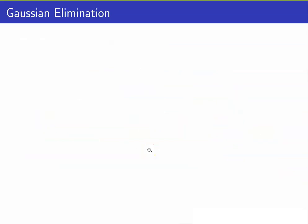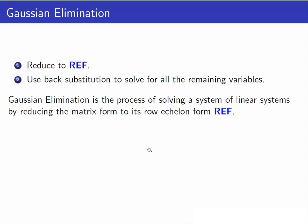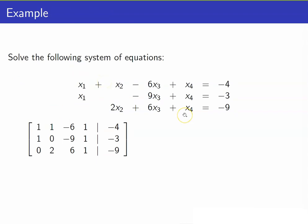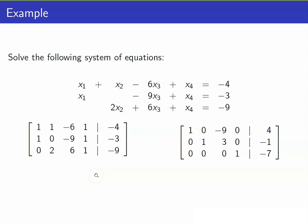Let me summarize the steps that we did to solve the previous example. First, we reduce the augmented matrix into its row echelon form. Second, we use back substitution to solve for all the remaining variables. This process of reducing the augmented matrix into its row echelon form is what we call Gaussian elimination. Going back to the previous example, I still have my system of equations and my augmented matrix. Now, instead of reducing this matrix into its row echelon form, I will be reducing it to its reduced row echelon form.